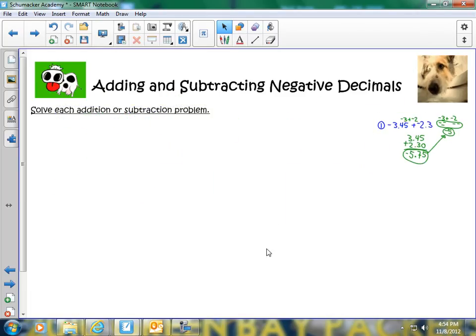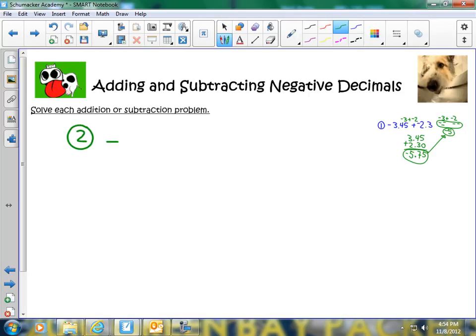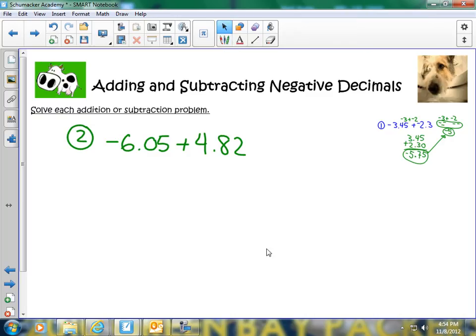Now, what happens if we have a problem where we have negative 6 and 5 hundredths plus 4 and 82 hundredths? Now I have a problem where I have one negative and one positive and it's addition. Well, it's best if we first estimate. We have a negative 6 plus, I make that a positive 5. Now to solve this problem, if you remember, let's go ahead and just model it one more time.